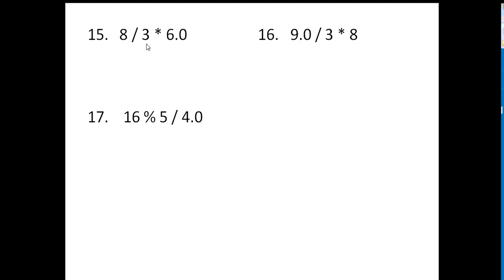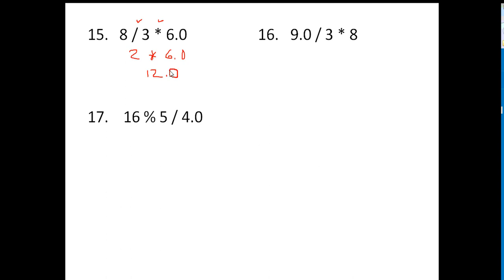Number 15: be careful here, because we're dealing with both order of operations and a double. We do division first: 8 divided by 3 — 3 goes into 8 twice, giving 2. Then multiply by 6.0. This is now an int times a double, so the answer has to be a double — it's 12.0, not 12.